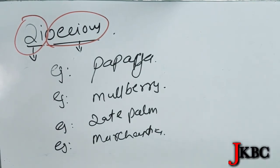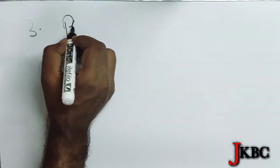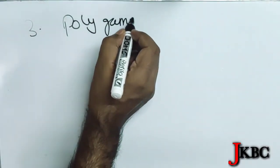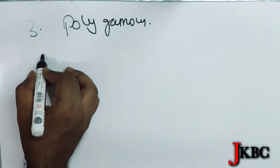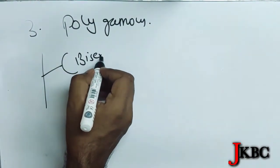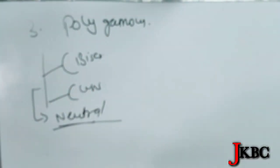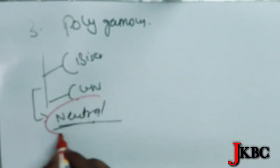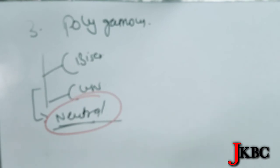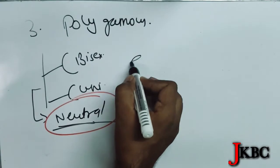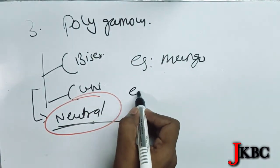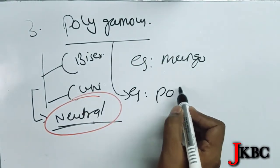The last term is polygamous. What do you understand by polygamous? Polygamous means that both bisexual and unisexual types of flowers — and also neutral flowers — are present in a single plant. So bisexual, unisexual, and neutral flowers are all located in a single plant — this is called polygamous. For example, mango. Another example is Polygonum — not similar in name, but you can remember it like this. Polygonum and mango — both are examples of polygamous plants.